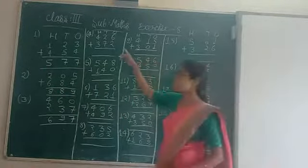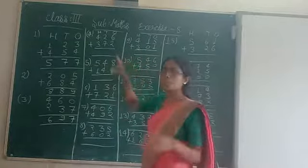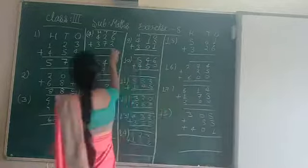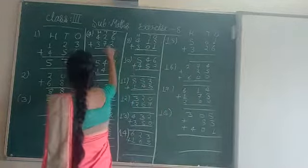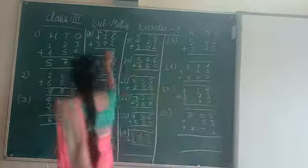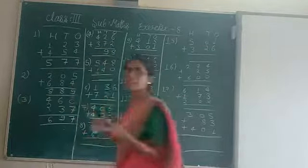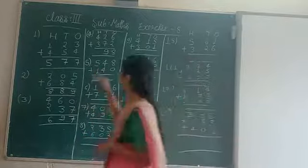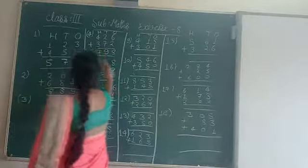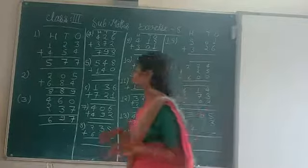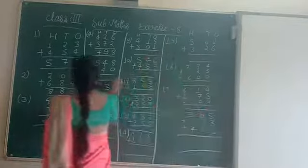Now question number 4: 6 plus 2 — 7 and 8. Then 7 plus 2 — 8 and 9. Then 4 plus 3 — 5, 6, 7. Then 8 plus 0 — if we add 0 to any number, we get the same number, so the answer is 8.